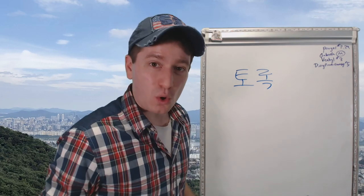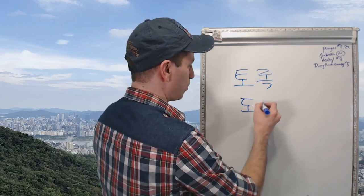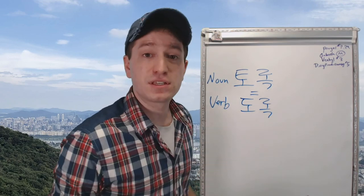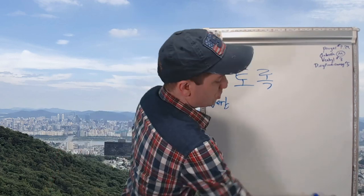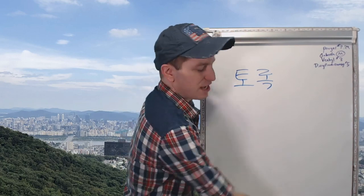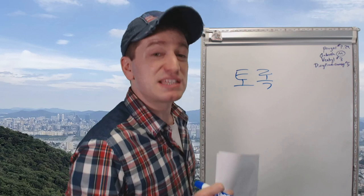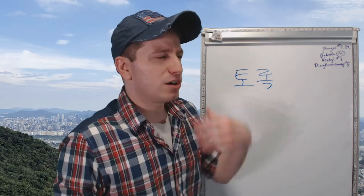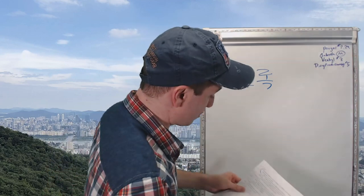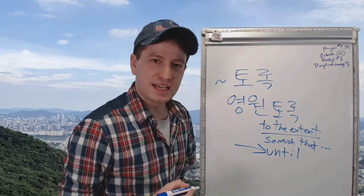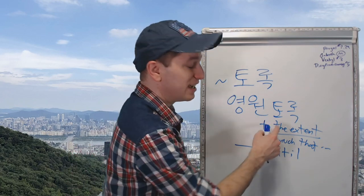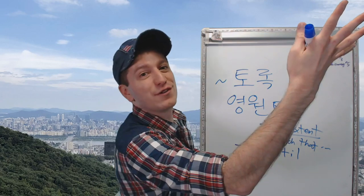Now you might have seen 토록. 토록 is actually the same thing as 도록. However, when you attach 도록 to a noun, it becomes 토록. A pro tip: do not stick 토록 onto nouns by yourself — 토록 is only used on specific nouns that are already commonly used with 토록. I'll tell you a few of the most common examples. 영원토록 — until 영원, meaning forever, eternal. You're literally saying 'to the extent of eternity,' 'until forever.'